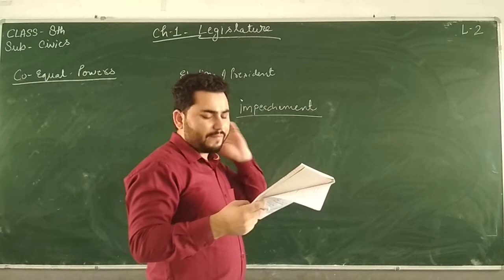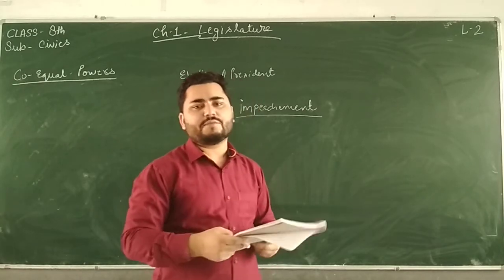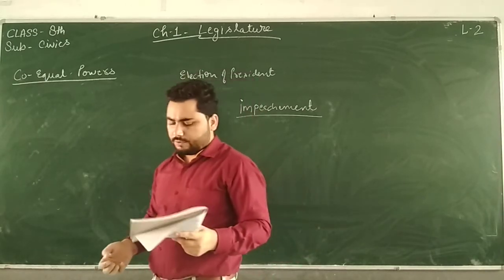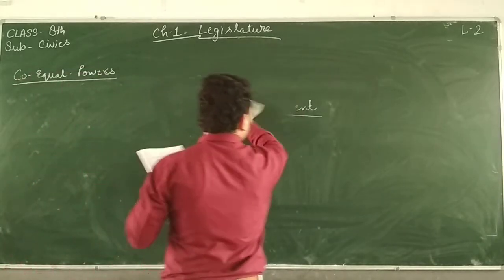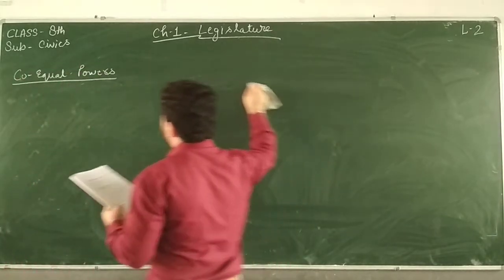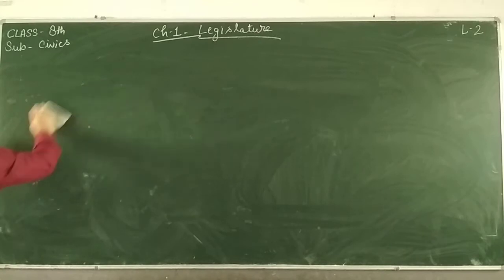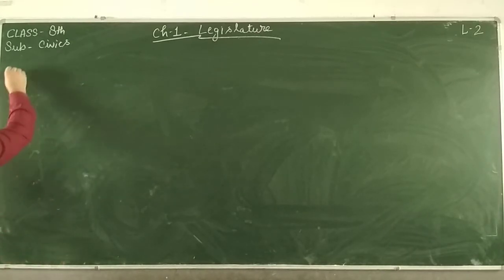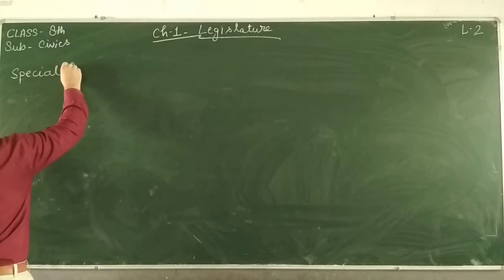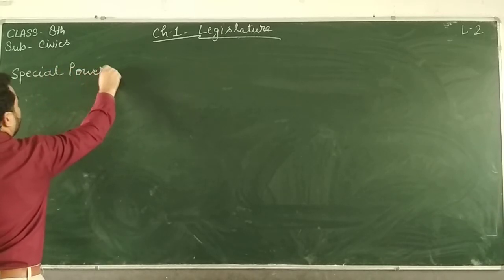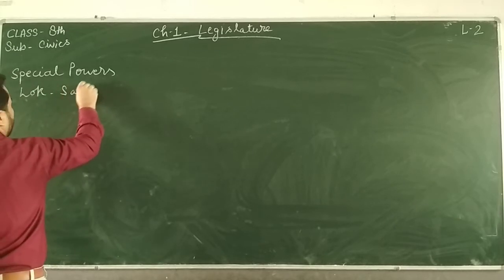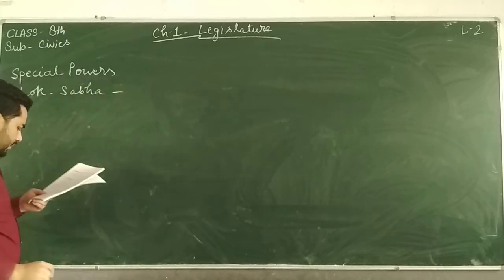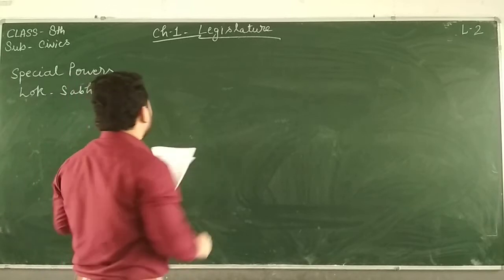Now, the special powers of Lok Sabha — powers given only to Lok Sabha, not to Rajya Sabha. The first special power concerns money bills. A bill is of two types: one is an ordinary bill and another is a money bill. A bill is a proposal or draft of a law-to-be.